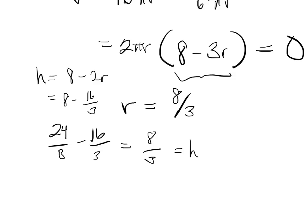Turns out the radius and the height are going to be the same, which tells us the volume πr²h is π times 8 thirds cubed.